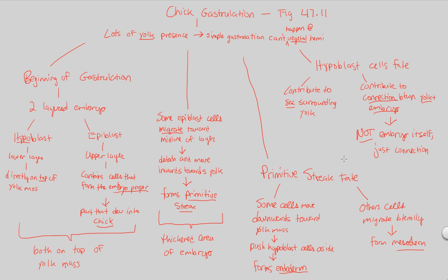That covers our look at chick gastrulation. Notice some of the differences, especially as a result of the yolk mass interfering. Now we have these different layers to keep in mind, and the primitive streak has been mentioned. These are going to be things we work off of as we now move on, exclusively, to human gastrulation. See you in the next section.